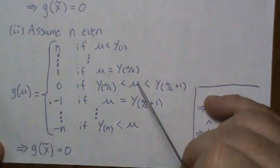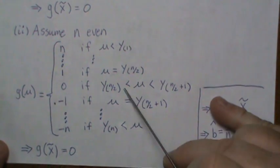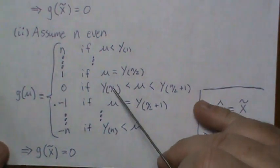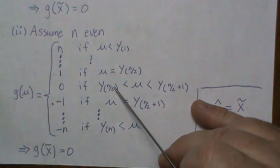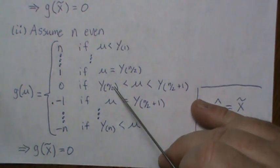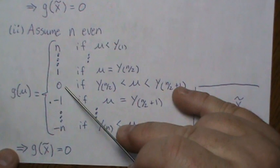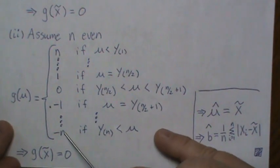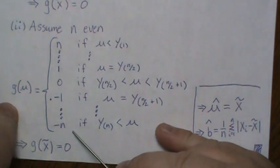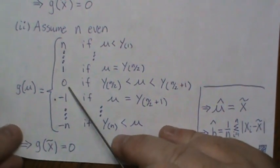And when mu is between the two middle values, then half of the half of the numbers will be ones and the other half will be negative ones, so they add to 0. And then as mu gets larger and larger between each data point, then it eventually goes to negative n.